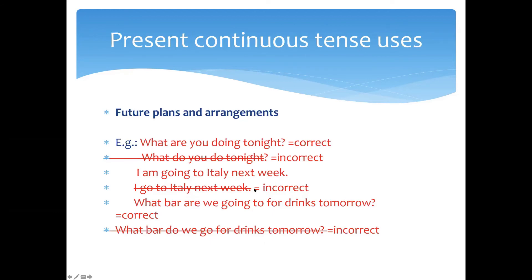Next, we use present continuous tense when we talk about future plans and arrangements. For the question 'What are you doing tonight?' we answer, for example, 'I'm going to a disco' or 'I'm going to a house party.' We don't use 'What do you do tonight?' — that would be incorrect. We cannot use present simple here. We use present continuous for our future plans — we are planning some activity or action tonight.